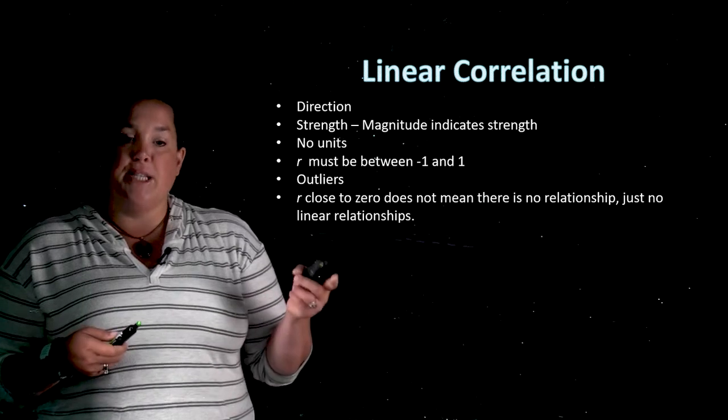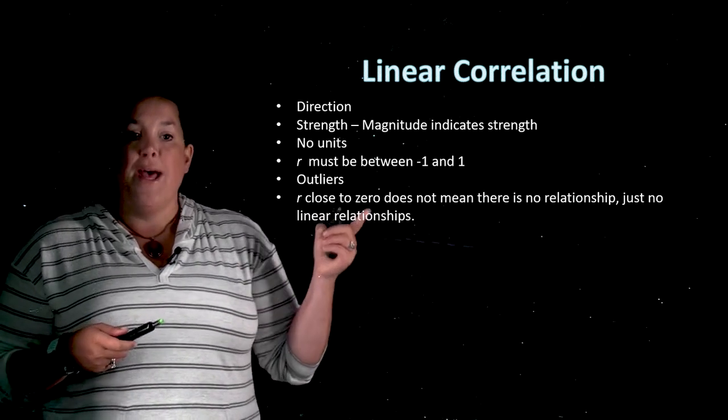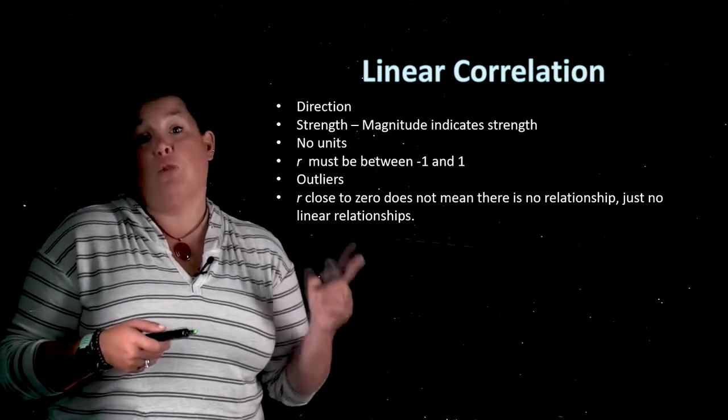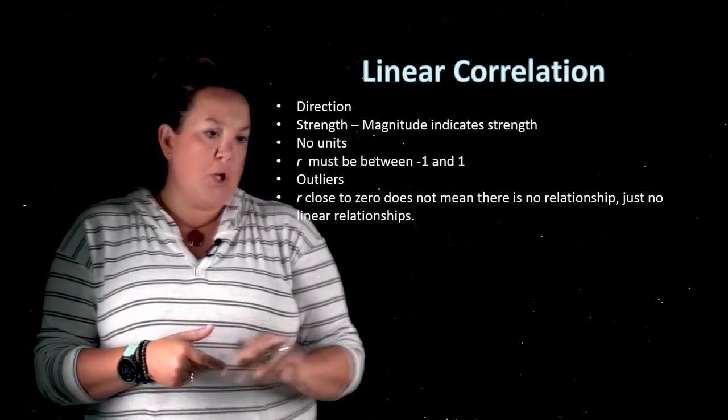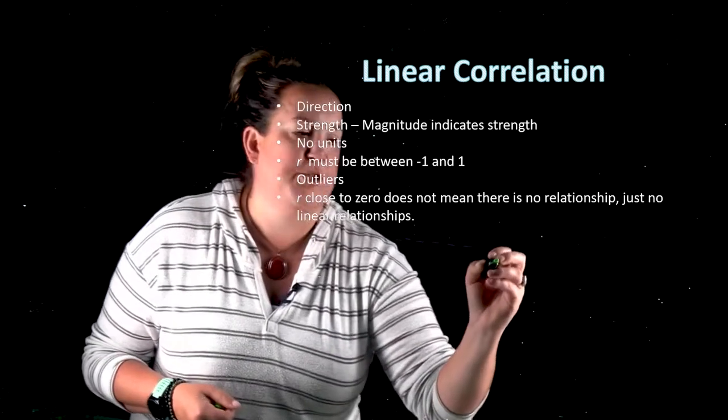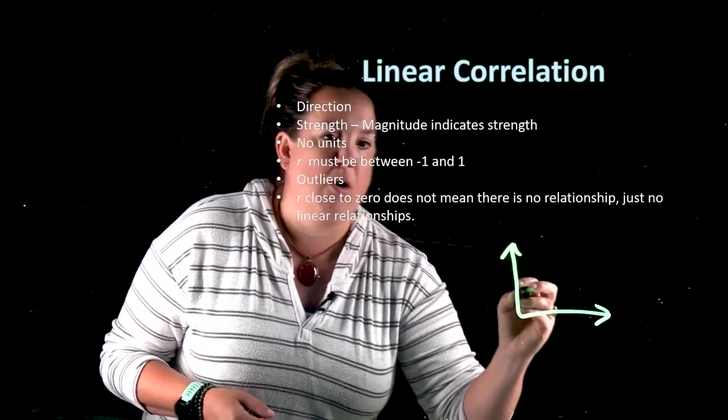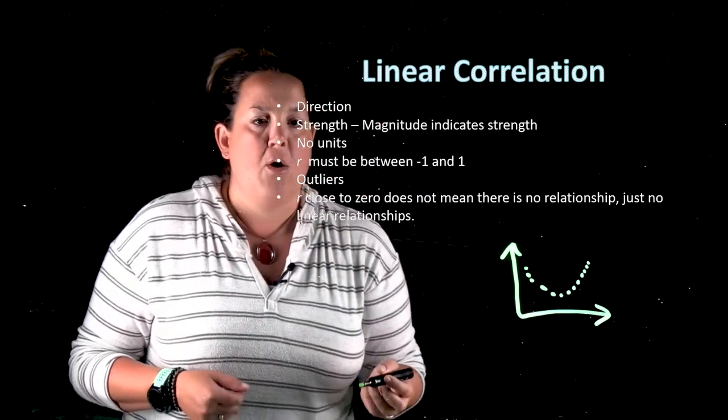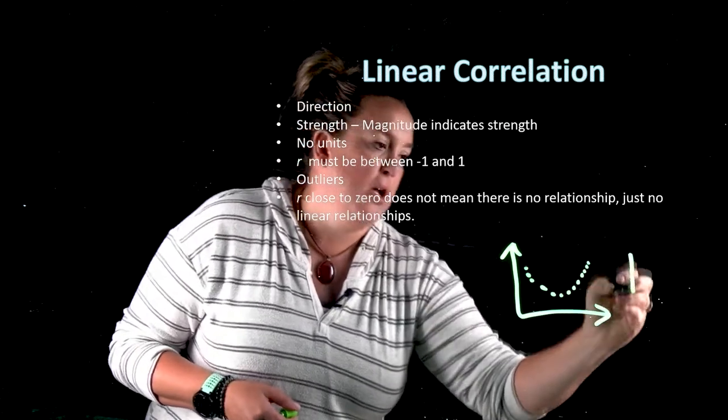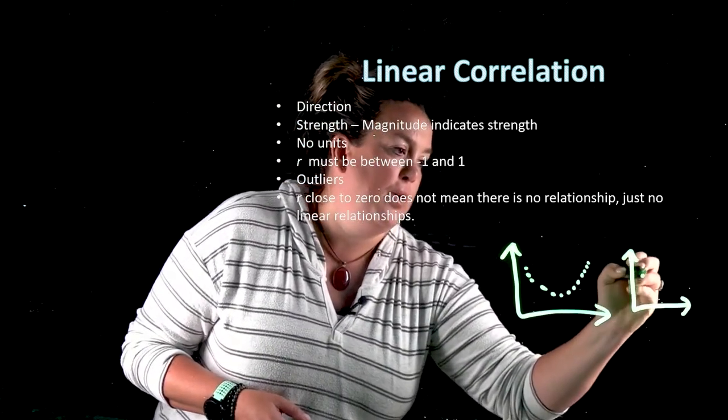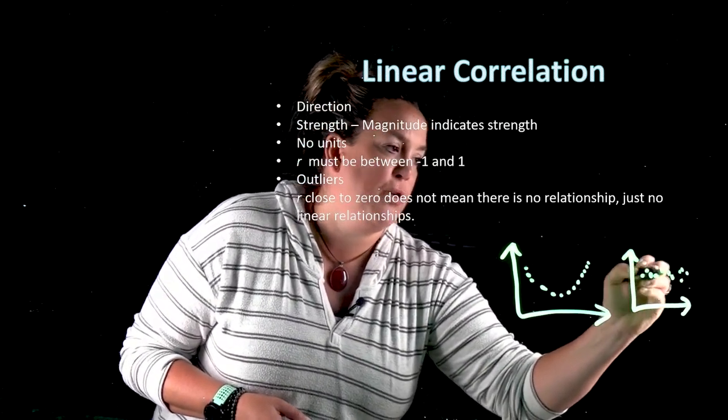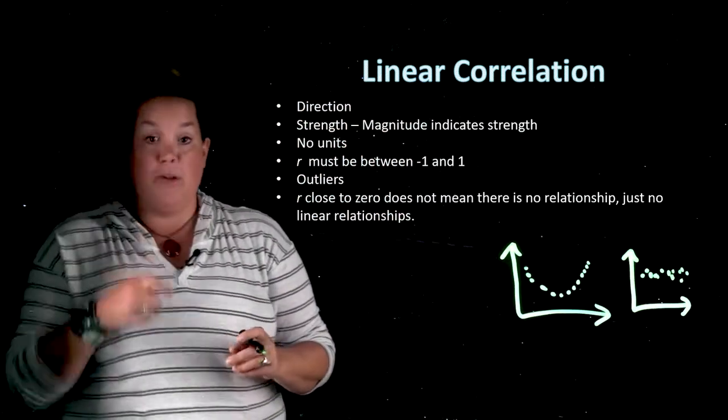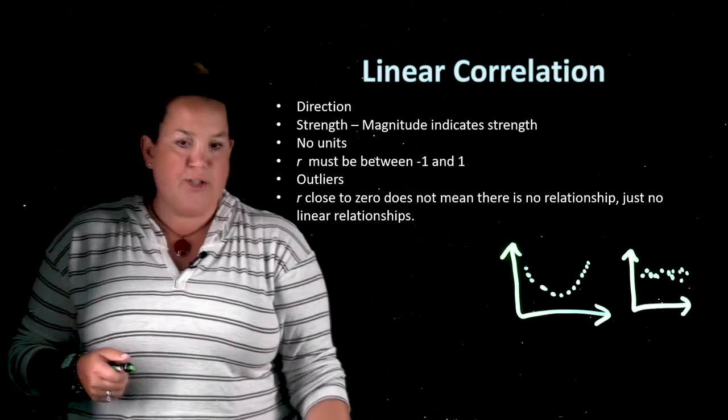The next thing to consider is that when you have an r that's close to zero, it does not mean that there's no relationship. It just means there's no linear relationship. So when you have a correlation coefficient and it looks like it's close to zero, you might have a situation like this, or you could have a situation that has kind of a blob that's going like this. This has a relationship, it's just not a linear relationship. And that might have an r that's closer to zero.